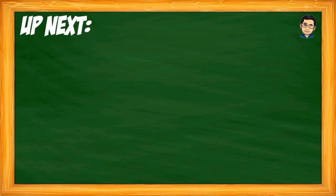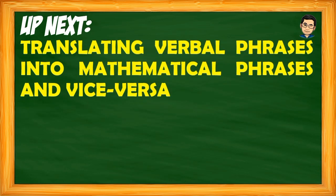We have now finished our discussion on measurement — six topics in total: measurement of length, mass and weight, volume, time, angle, and temperature. Our next topic moves to another branch of mathematics, algebra, beginning with translating verbal phrases into mathematical phrases and vice versa. I hope the discussion on measurement was clear. Thank you very much.